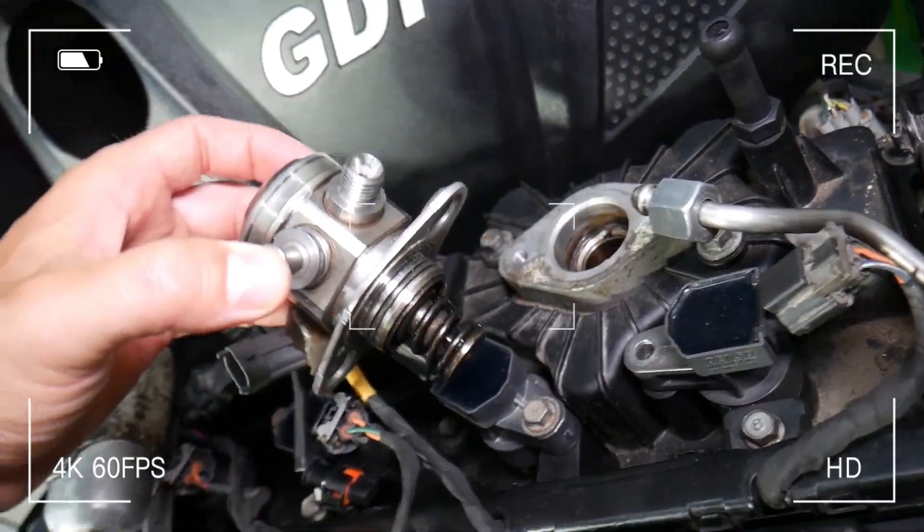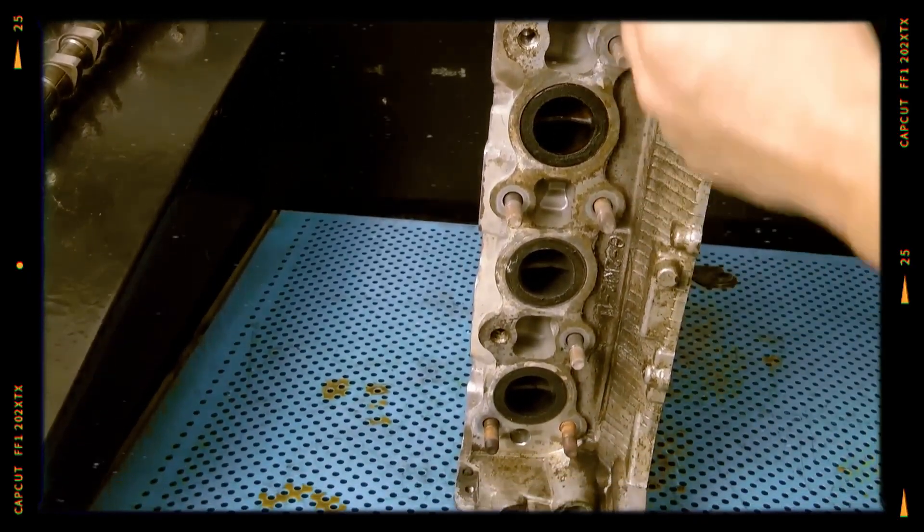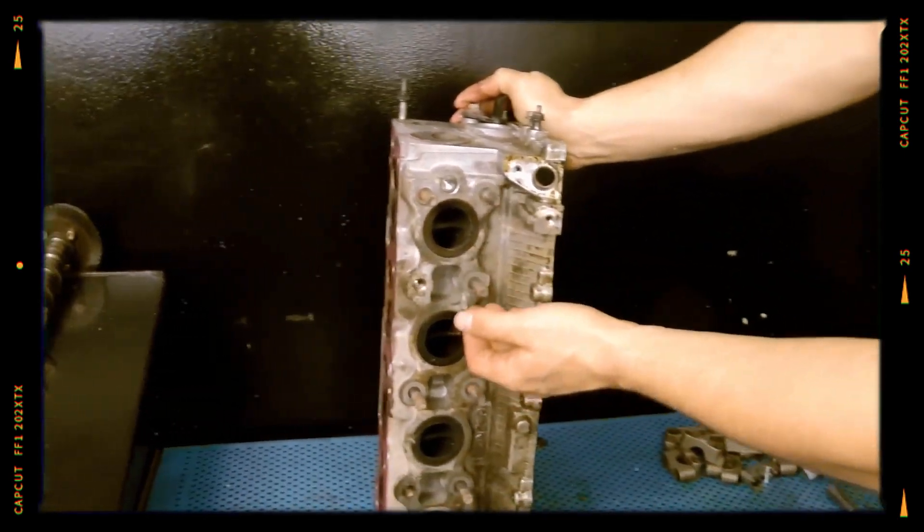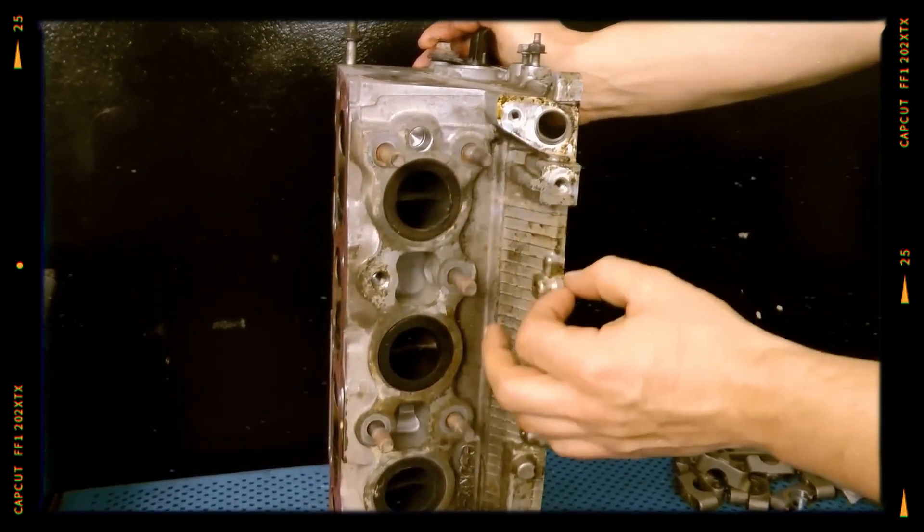yet promotes heavy intake valve carbon. Because fuel no longer washes deposits from the ports, a routine walnut shell blast every 40,000 to 50,000 miles keeps airflow and mileage healthy.